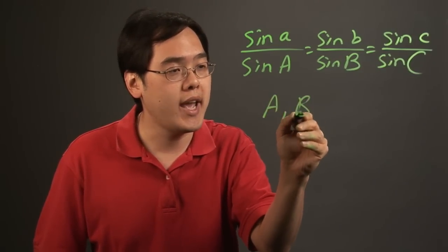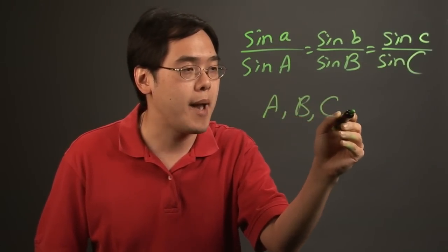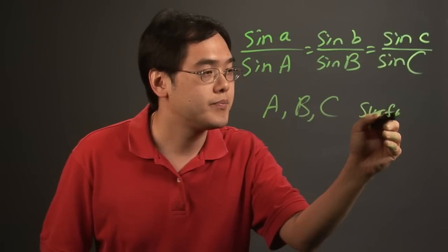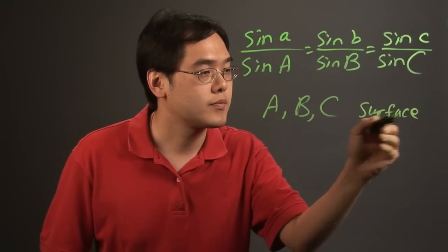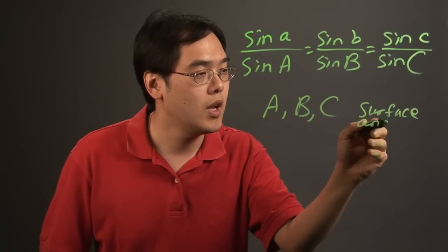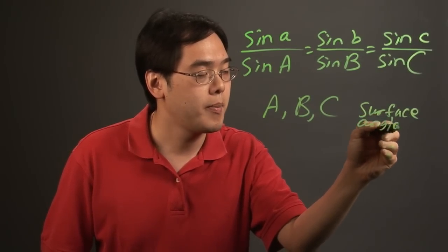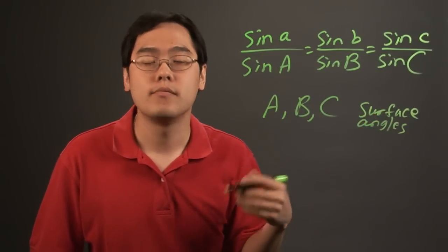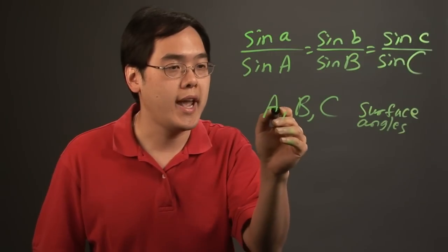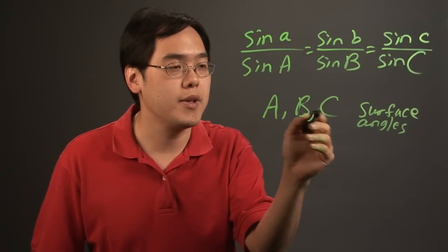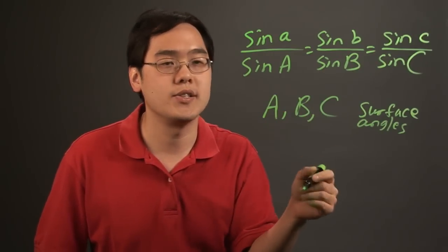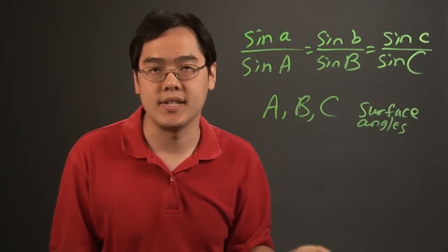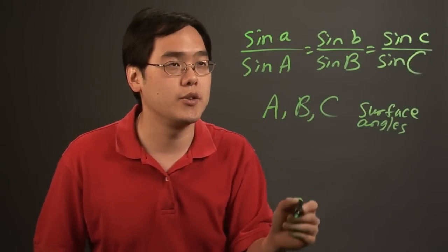Capital A, capital B, and capital C are the surface angles of the triangle, which you might expect. So A, B, and C can be thought of as the surface angles of the triangle.